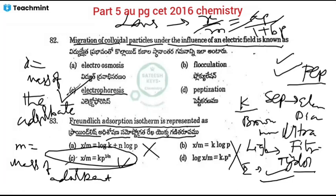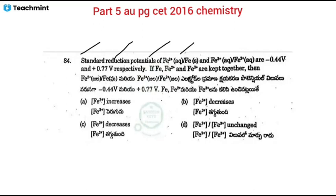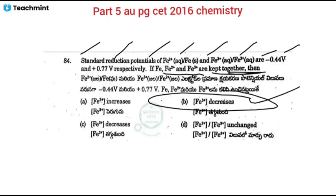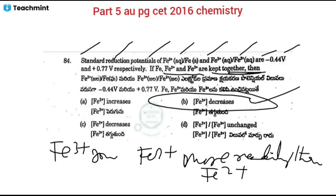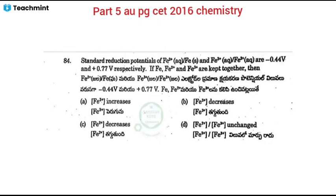Bit 84: Standard reduction potential of Fe²⁺/Fe is −0.44 V and Fe³⁺/Fe²⁺ is +0.77 V. If iron Fe²⁺ and Fe³⁺ are kept together, Fe³⁺ ions will be reduced to Fe²⁺ ions more readily. Reducing Fe²⁺ to Fe is somewhat difficult and not as easy. So Fe³⁺ concentration decreases, and option D is correct.